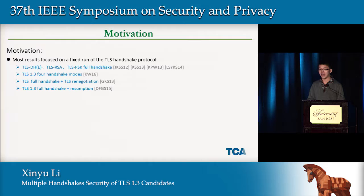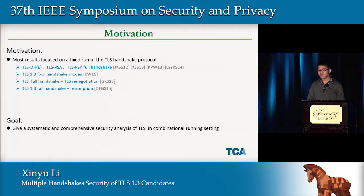There are wonderful works on security proofs of TLS, including TLS 1.2 and TLS 1.3 handshake modes. Significant progress includes results for TLS 1.2 renegotiation in 2013 and TLS 1.3 resumption in 2015. However, most existing results only analyze one TLS 1.3 handshake protocol, which is not enough. Our goal is to give a systematic and comprehensive security analysis of TLS in a combined setting, covering various dependencies and interactions between different handshake modes.